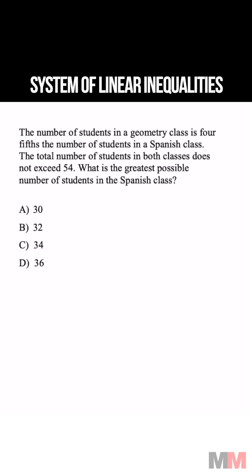The number of students in a geometry class is four-fifths the number of students in a Spanish class. Let's go ahead and write that equation: g equals four-fifths of the people in a Spanish class.